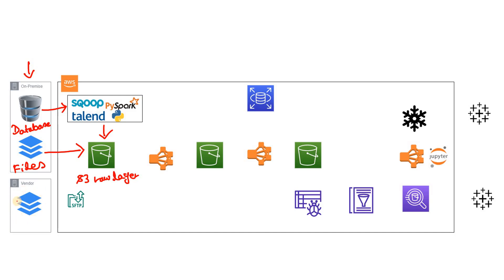If the files are generated by some vendor company, the safest and most secure option is SFTP — SSH-based file transfer protocol — using which we can ingest the data into the S3 raw layer. Here we do not apply any transformation or cleansing on our data. To run the big data batch pipeline, we then launch an EMR cluster.